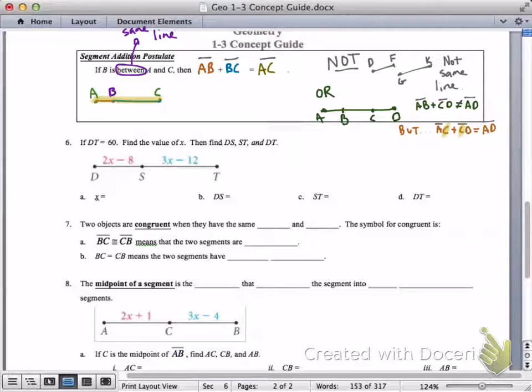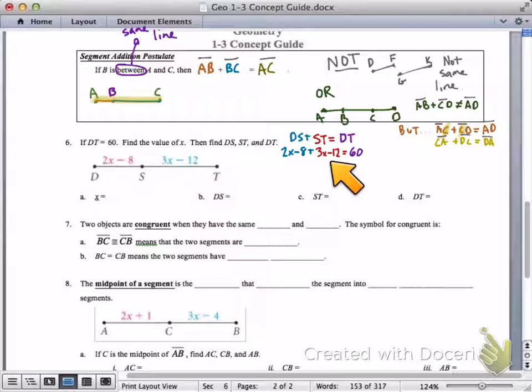So, let's look at an example. We have the scenario, DT. The length of DT, this entire segment, is 60. It tells us that DS is equal to 2X minus 8, and ST equals 3X minus 12. Find the value of X, and then find the lengths of all these other segments. So here we go. DS plus ST equals DT. That would be the Segment Addition Postulate. We can take this expression of what DS is equal to, plus the expression of what ST is equal to, equal to the whole thing that DT is equal to. So, in this case, we get 2X minus 8, plus 3X minus 12 equals 60. We now have a single equation with a single variable, X, that we know how to solve from algebra. Solve it. That will get us X.